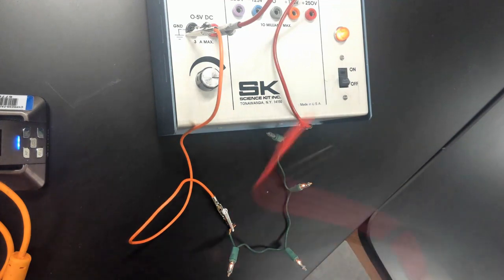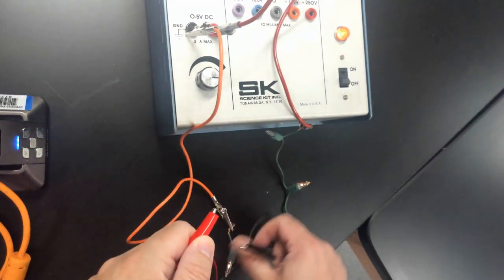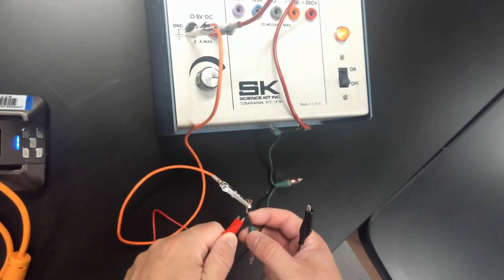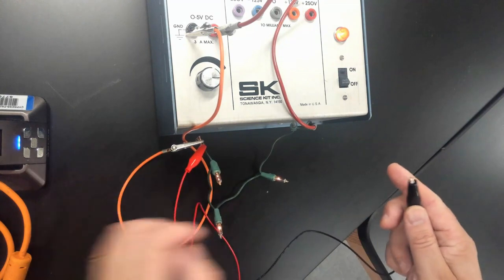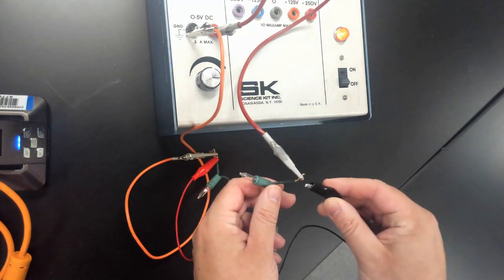You get this thing and it has two antenna-looking things on it. So you take one of the clamps and you have to put it right here on the copper wire, and then you take the other clamp and put it right here on the copper wire.